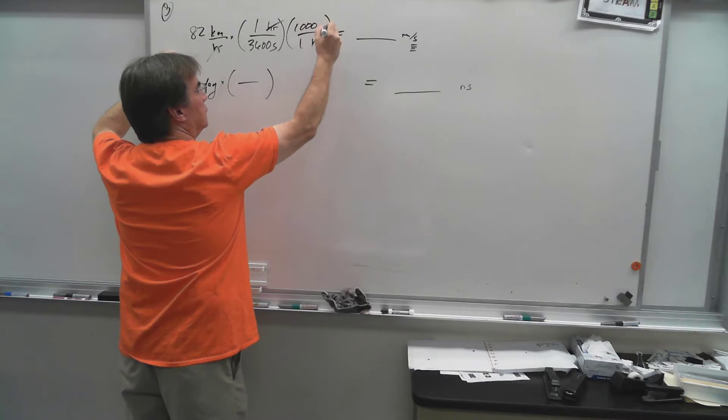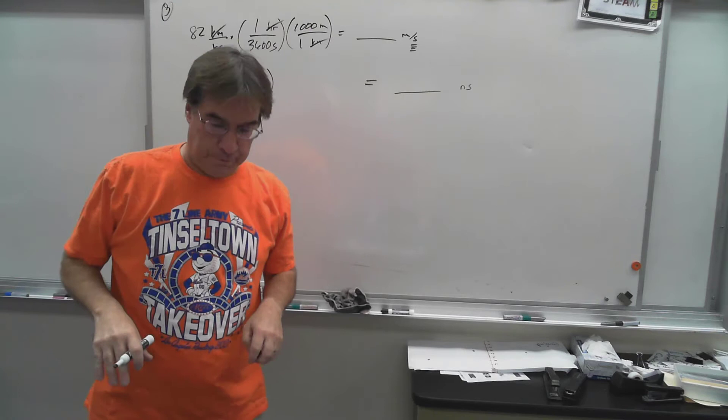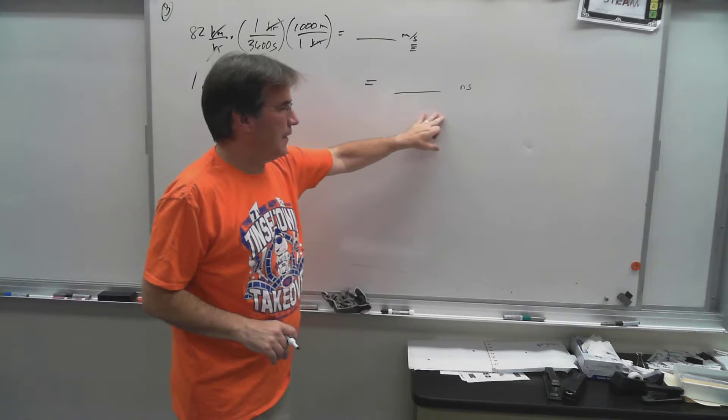To get rid of kilometers, I can say, well, one kilometer is 1,000 meters, and everything's gone except meters and seconds. So 82 times 1,000 divided by 3,600. Your answer, over on the right, it's what you should be getting.